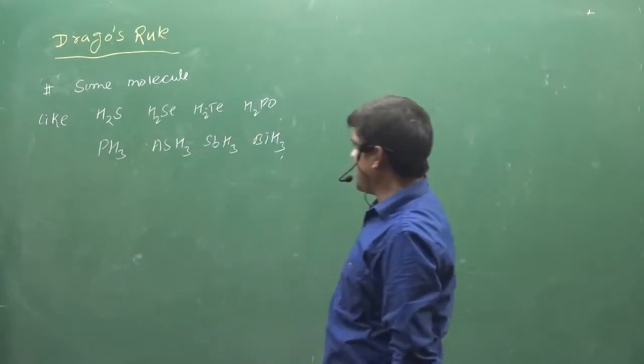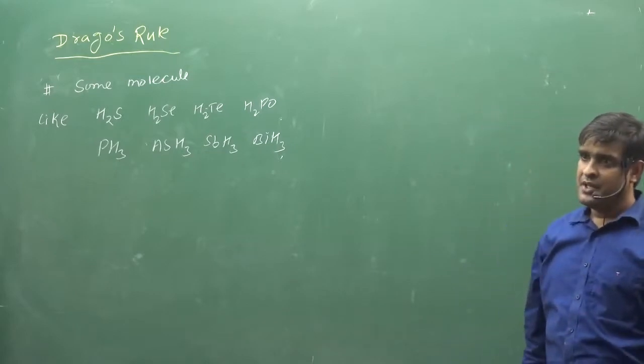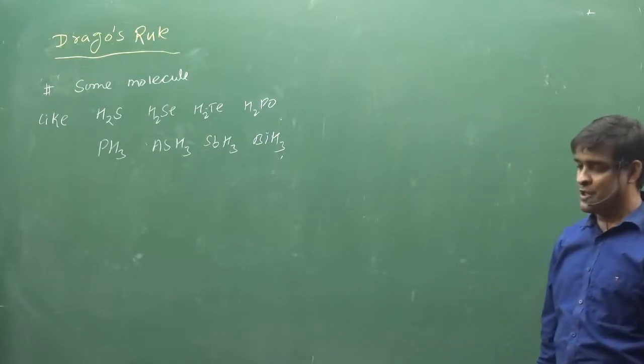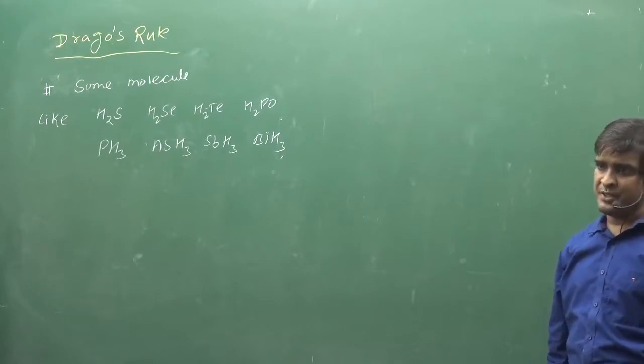these three. So these are 8 molecules like this, the bond angle is 90 degrees, approximately 90 degrees.